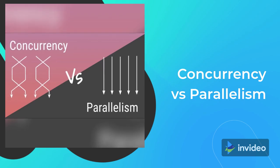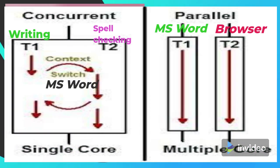Now let's discuss concurrency and parallelism. If we have a single process — for example, a Word application — with two tasks: T1 is writing text and T2 is spell checking. When you press the spacebar or Enter, spell checking starts. So there are two threads: one involves I/O operation and one involves spell checking. Whenever T1 finishes, T2 starts, and when you start typing again T2 stops. Basically T1 and T2 are doing context switching, running on a single-core machine.